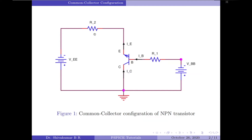Input characteristics are obtained by plotting the voltage across the input terminals VBC and recording the input current IB at a fixed value of the voltage across the output terminals VEC. Note that the negative terminal of the supply VBB is connected to the base terminal. As the input voltage VBB is increased, a negative voltage is applied across the base to collector terminals and therefore it will be reverse biased. When you increase VBB the base current starts to decrease, and eventually the current will reach zero.